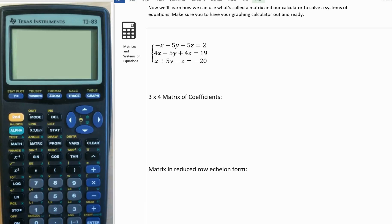The method we're going to use here is called matrices, or singular, matrix. A matrix is a way we can store data in our calculator, and then the calculator can actually do Gaussian elimination for us and give us the answer.